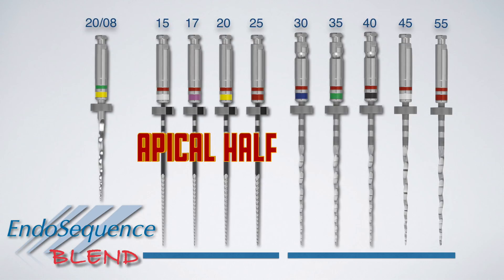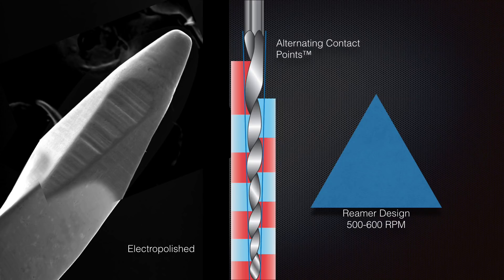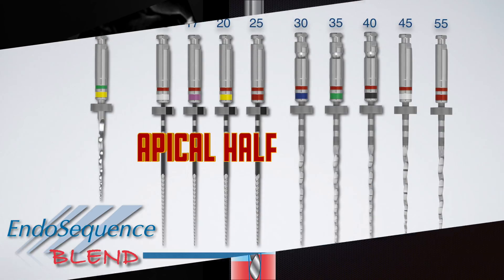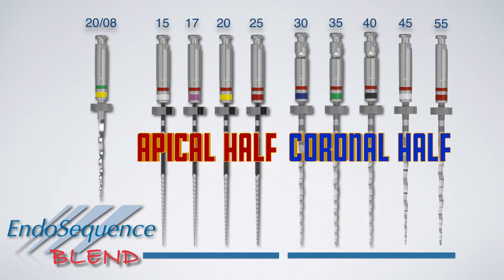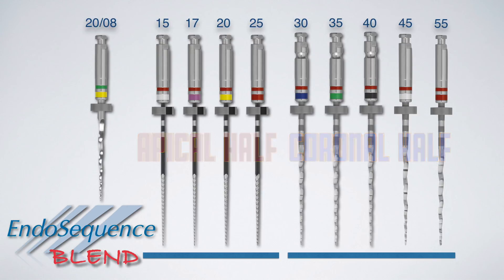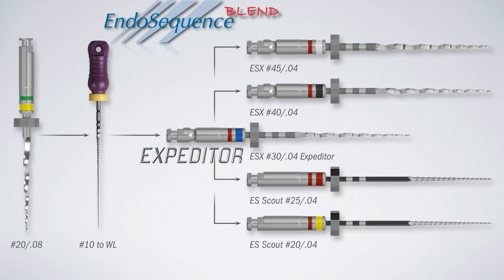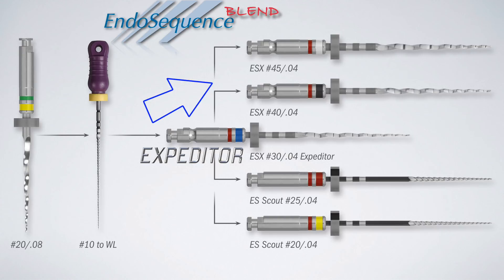The EndoSequence Scout files are heat treated with lands and perform well in the apical half of the root canal, while the EndoSequence and ESX files are non-heat treated, triangular in cross-section, very efficient, and work best in the coronal half. The expediter file is the first file that goes into the canal after your orifice opener and mild hand filing. If the expediter reaches the apex easily within one or two rhythm motions, you move up in size toward 35, 40, 45, or larger until you get clean dental flutes.